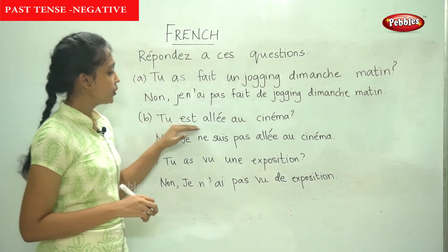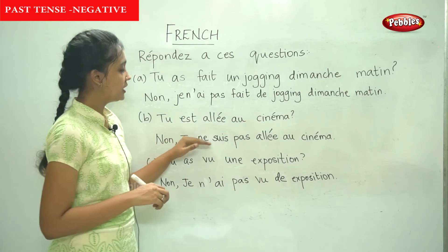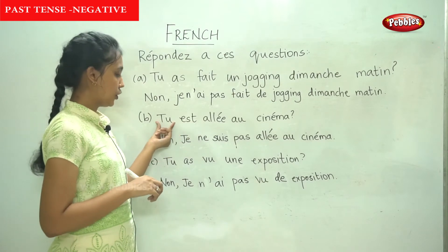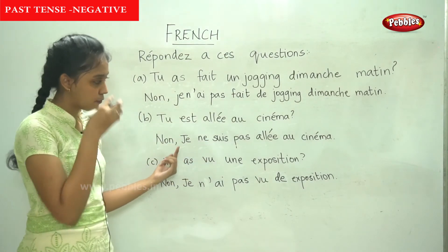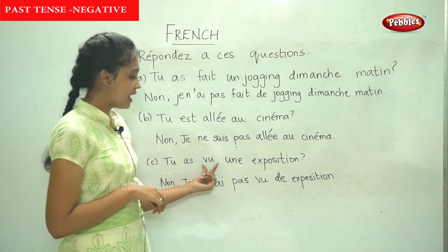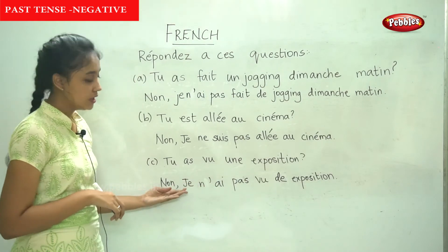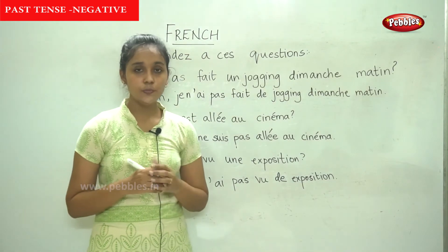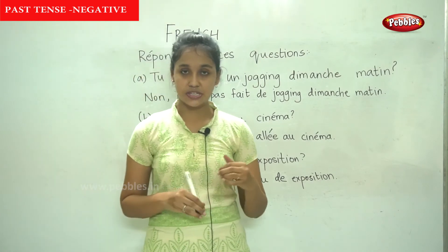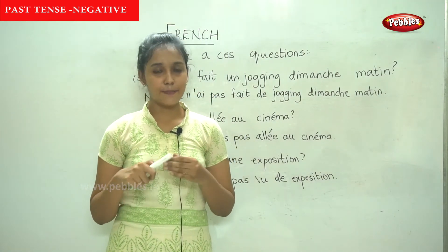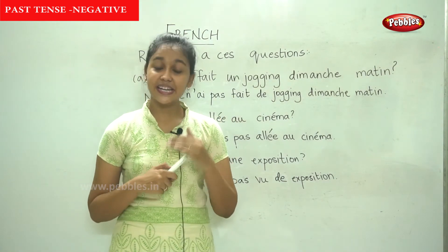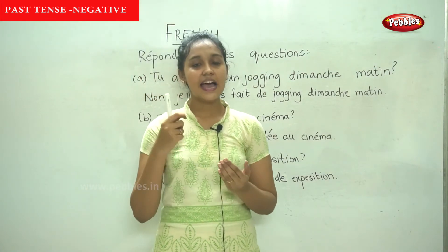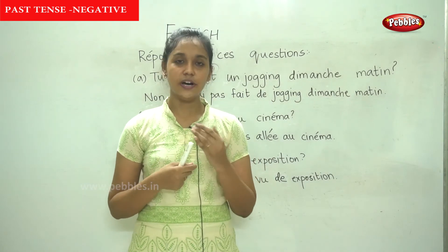The next one: tu es allé au cinéma? Non, je ne suis pas allé au cinéma — that is the être conjugation for je. And the next sentence: tu as vu une exposition? Non, je n'ai pas vu d'exposition. So the rules of passé composé are avoir or être plus the past participle. For the negative, add ne before and pas after the avoir or être conjugation.